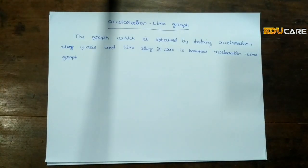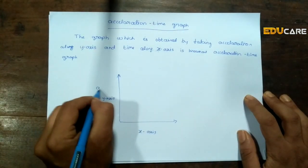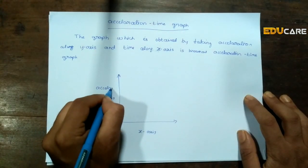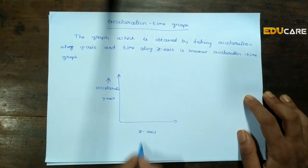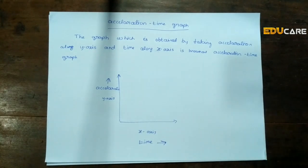Let us draw a graph of two coordinates containing the x and y axis. If we take acceleration along the y-axis and time along the x-axis, then we can say that this is an acceleration time graph. This is the first thing to know.